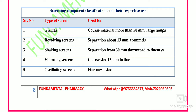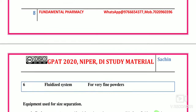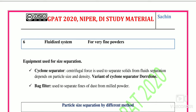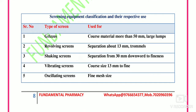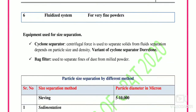Screening equipment and their classification: Grizzlies are used for coarse material with large lumps more than 50 mm. Revolving screens are used for separation of material around 30 mm. Shaking screens are used for separation from 30 mm downwards to fine. Vibrating screens are mainly employed for coarse sizes from 30 mm to fine. Oscillating screens are mostly used for fine mesh sizes. Fluidized systems are employed for very fine powders.